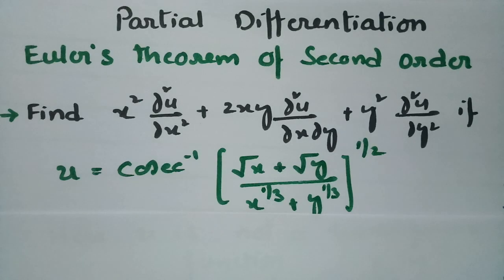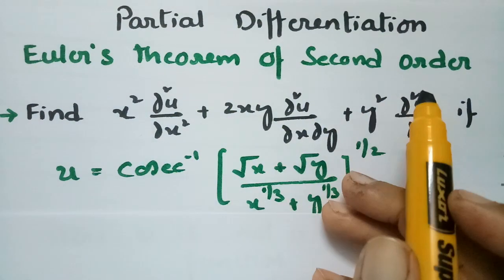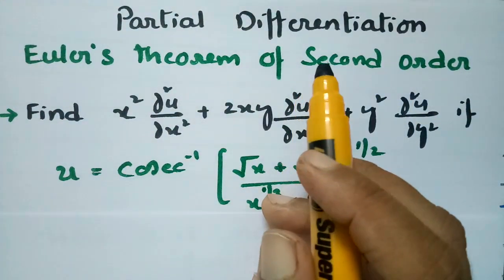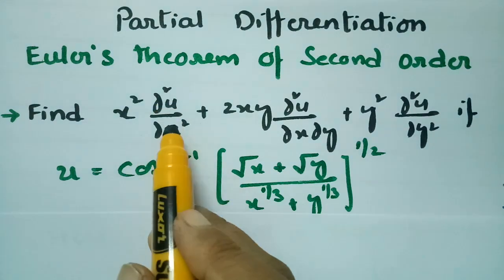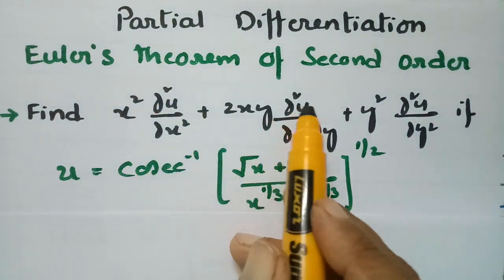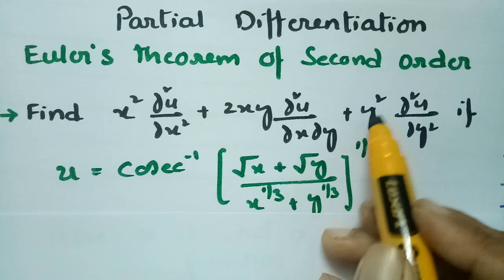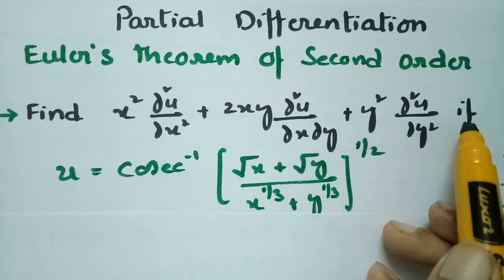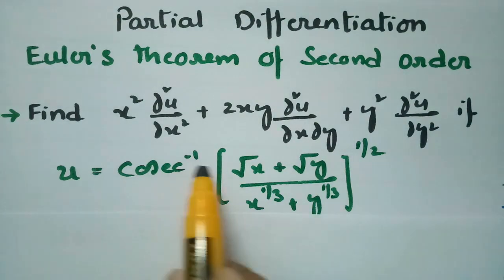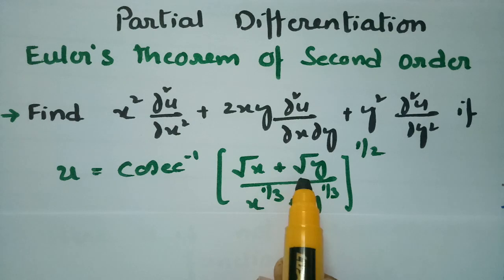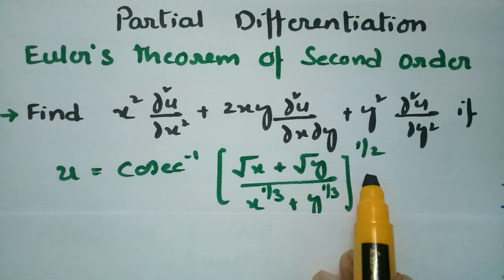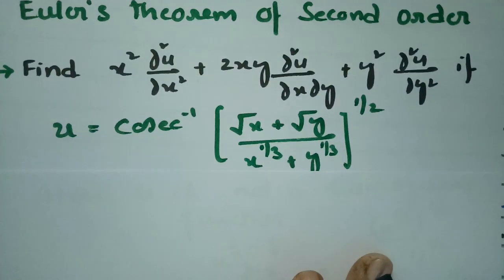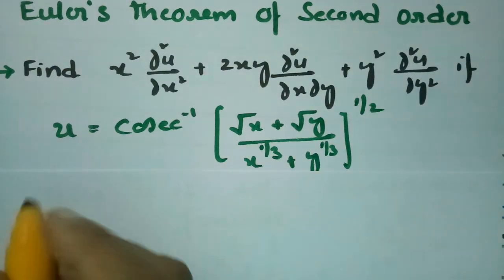Today's video I am going to give a solution for the most important problem. This is Euler's theorem of second order and this topic is from partial differentiation. Here we have to find x² ∂²u/∂x² + 2xy ∂²u/∂x∂y + y² ∂²u/∂y², where u is given as cosec⁻¹ of (√x + √y) / (x^(1/3) + y^(1/3))^(1/2). It is very clear that u is not a homogeneous function.